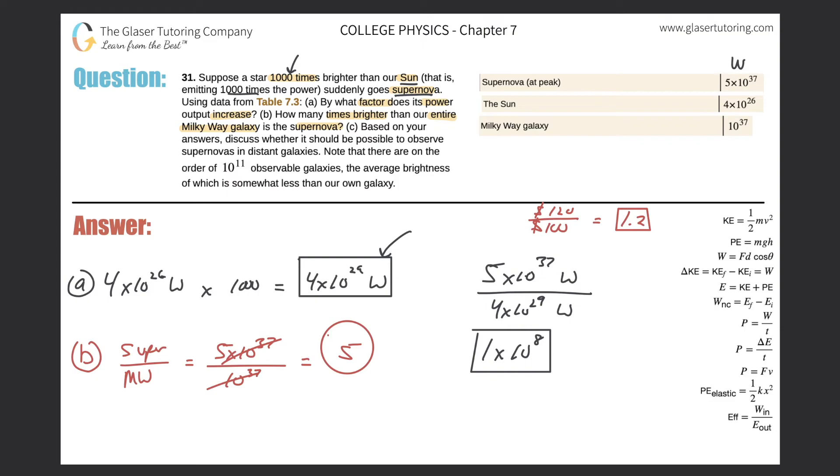So basically that's how many times brighter a supernova is than the entire Milky Way galaxy. It's going to be about five times brighter. And now let's take a look at letter C.